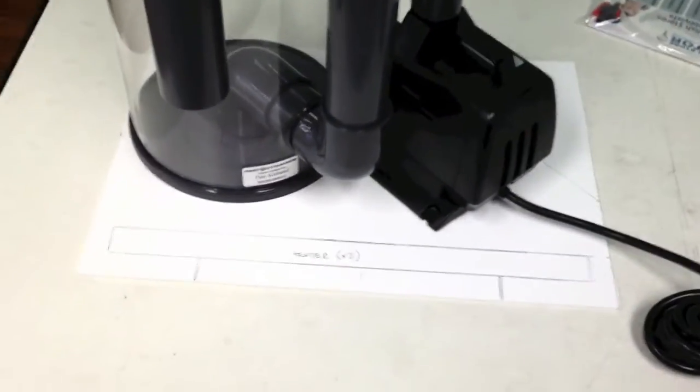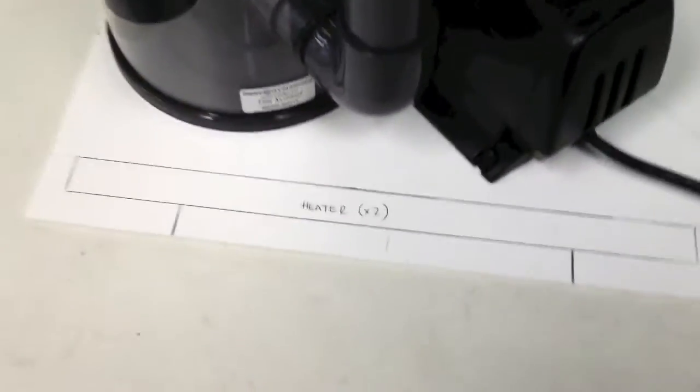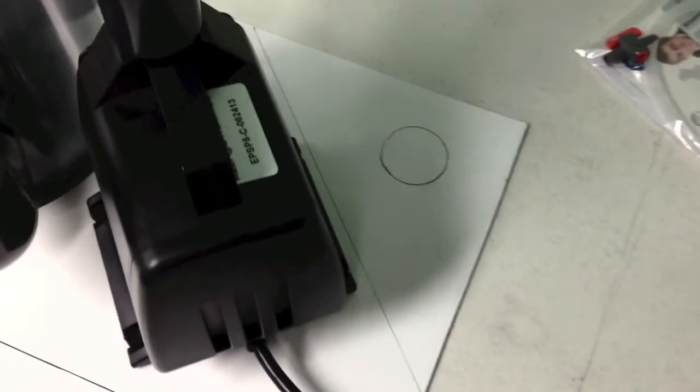He had a very small space, this much space for a protein skimmer. That white piece of paper is a template and you can see his heaters go down there and here's a pre-filter corner thing.